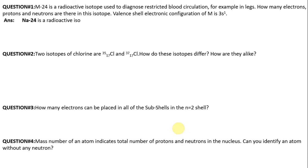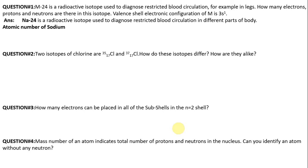Sodium-24 is a radioactive isotope used to diagnose restricted blood circulation in different parts of the body. The atomic number of sodium-24 is 11. The number of electrons is equal to 11, and that is equal to the number of protons. The atomic number of sodium is 11, so the number of protons is 11 and the number of electrons is 11.